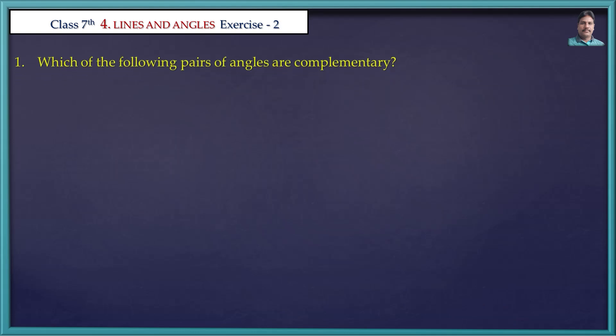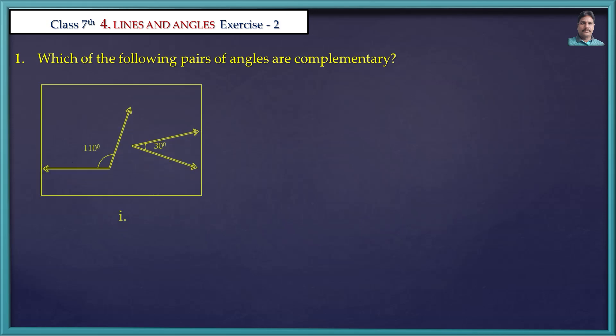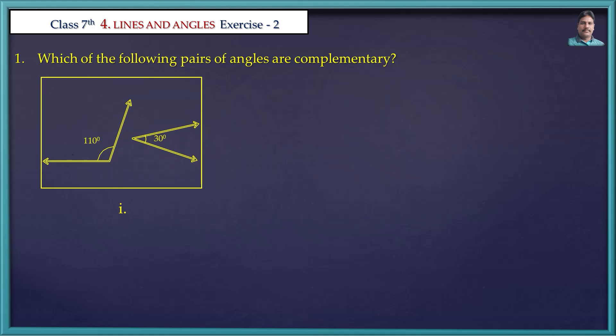First problem: Which of the following pairs of angles are complementary? The first figure is given. This angle is 110 degrees and another angle is 30 degrees. Do you know what is a complementary angle? When the sum of two angles is 90 degrees, we say they are complementary angles. If we add 110 plus 30 we get 140 degrees. That is not equal to 90 degrees, so these are not a complementary pair.